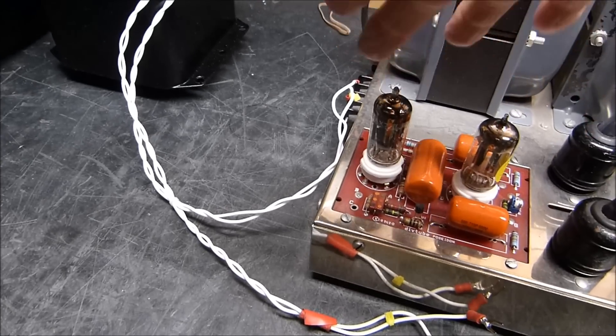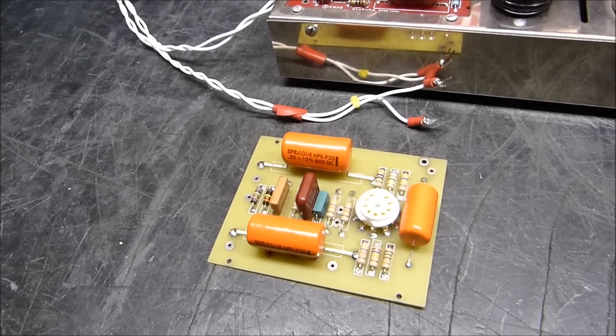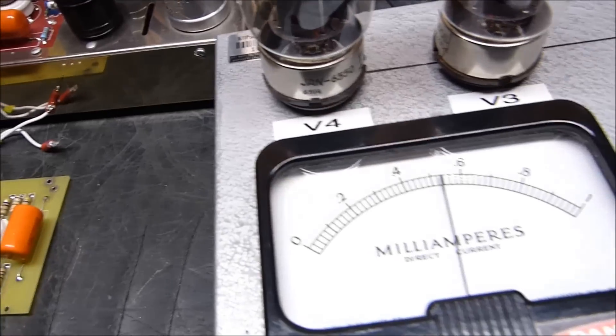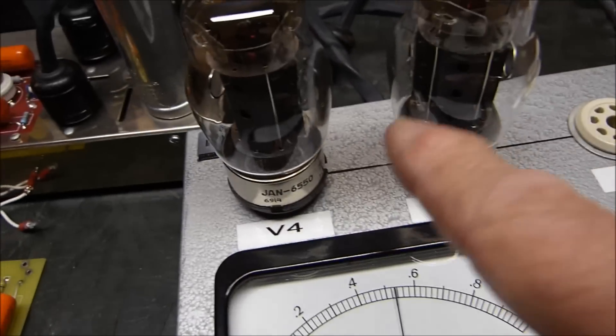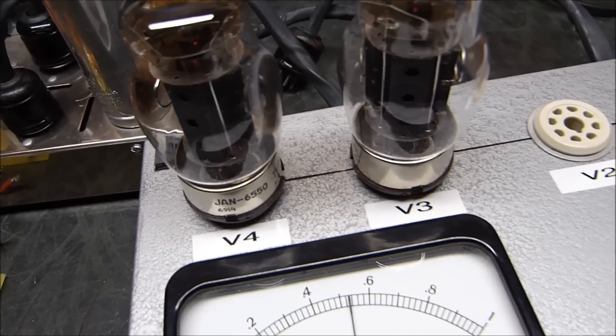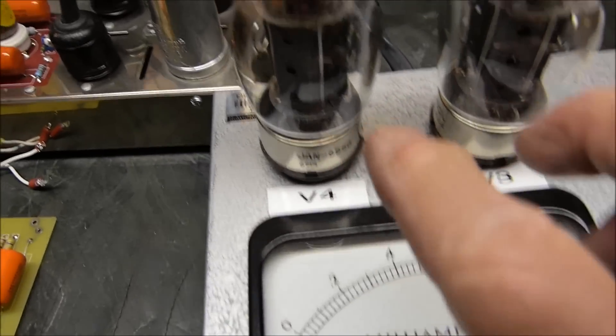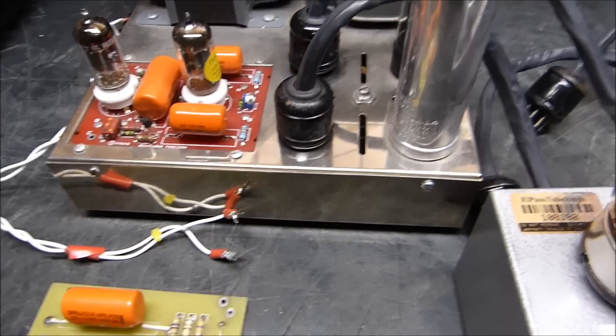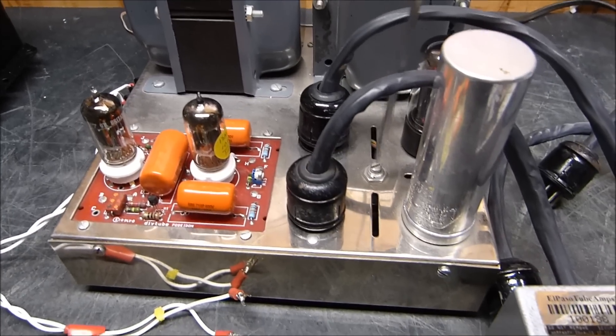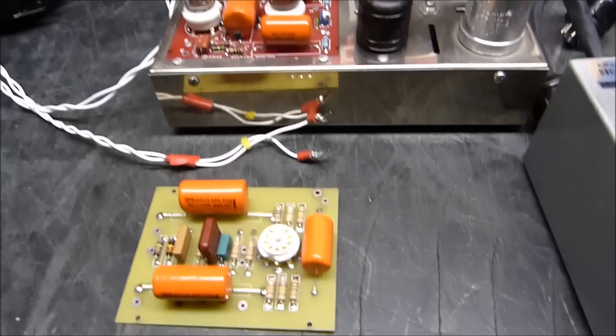I'll hand-select the best 6AN8 that I have. One thing that I know we're going to miss is being able to balance the plate currents. We can set the bias right here and adjust the plate current, but we can't balance the two. That's one thing we're going to be missing in this board, and I think it's going to make a difference.